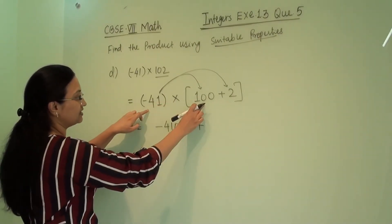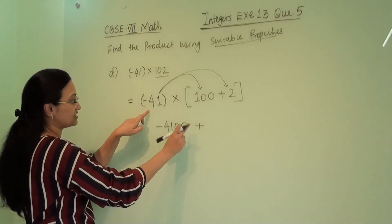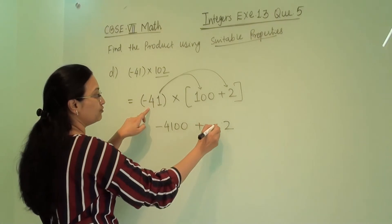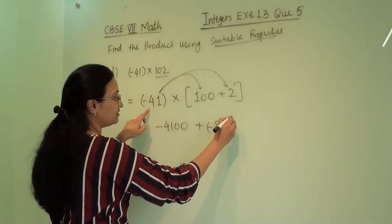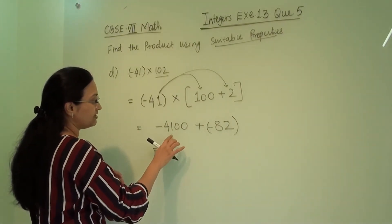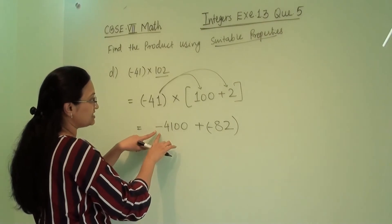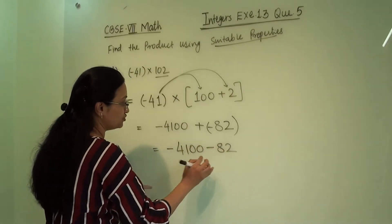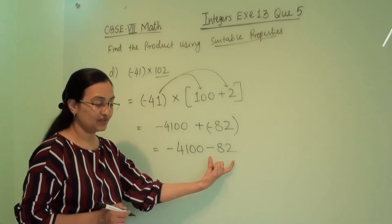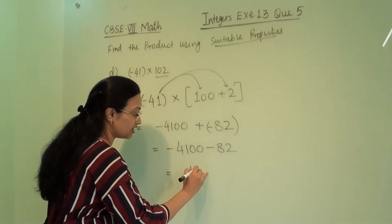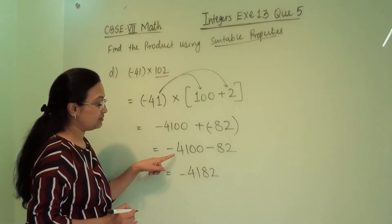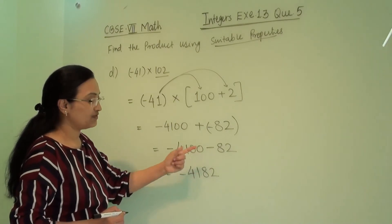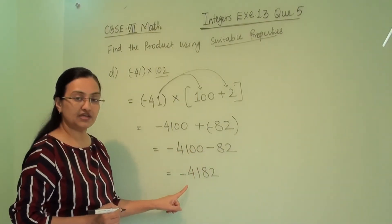Now (-41) × 2: doing row multiplication, 2 × 1 = 2 and 2 × 4 = 8, so 82. Since this is negative, the answer is -82. Now -4100 plus -82: both integers are negative, so we add them. The answer is 4182, carrying the bigger number's sign, giving -4182.